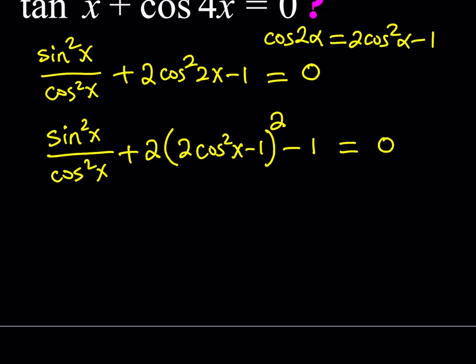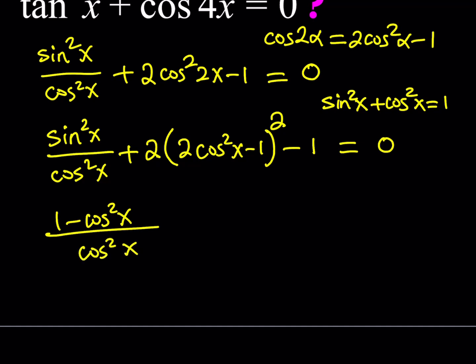Now I'd like to expand this. I still have a sine squared in the numerator, and I'd like everything in terms of cosine. Using the Pythagorean identity — sine squared x plus cosine squared x equals 1 — I can replace sine squared x with 1 minus cosine squared x. This identity is very important in trigonometry; we used it in the previous video as well.